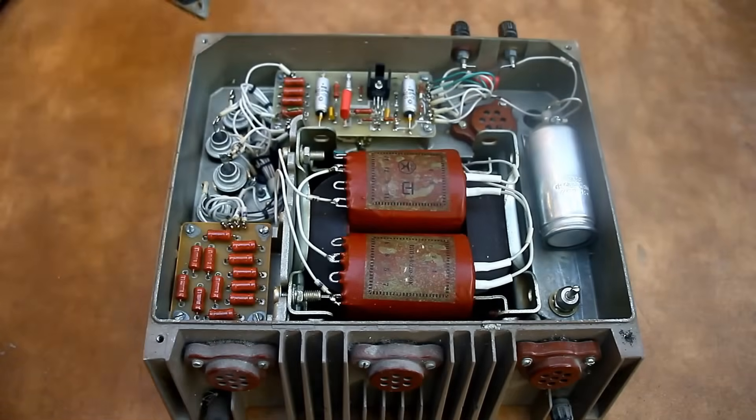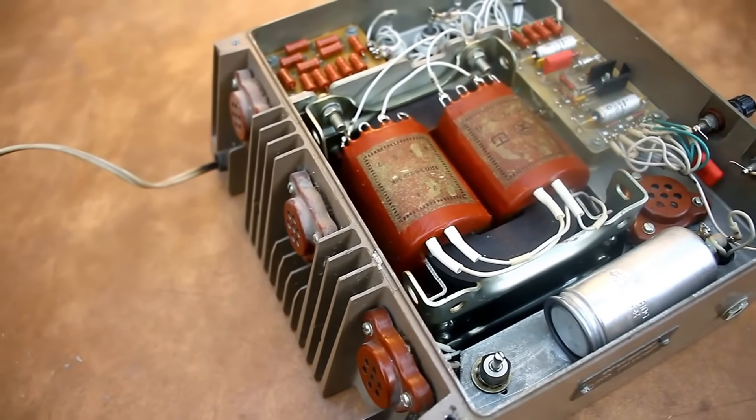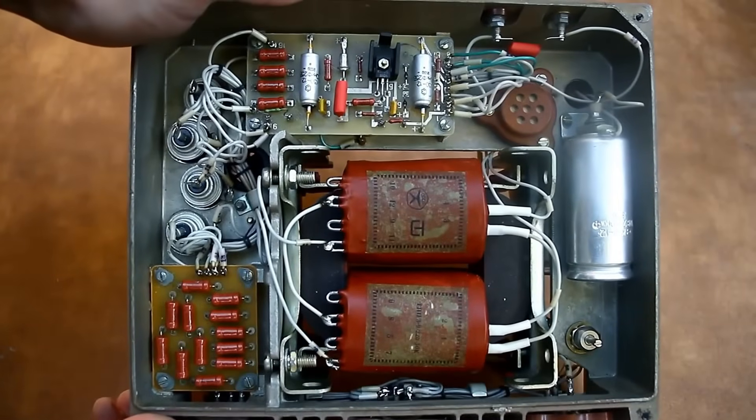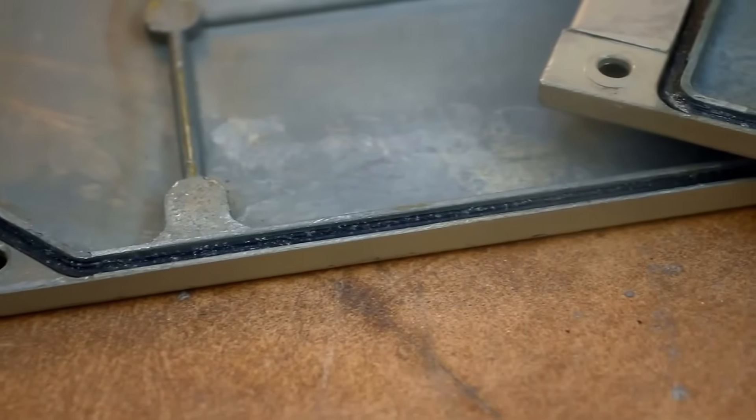By unscrewing the covers, we can peek inside the power supply. And this is where it gets really interesting. First of all, there's the perfect cleanliness, which is not surprising. The unit has enhanced dust and moisture protection. You can notice sealing rubber rings on the covers.